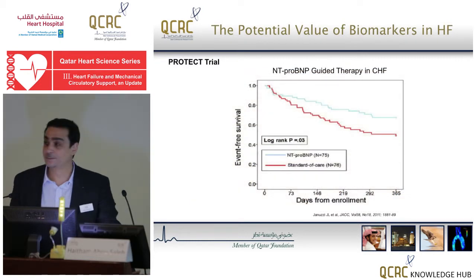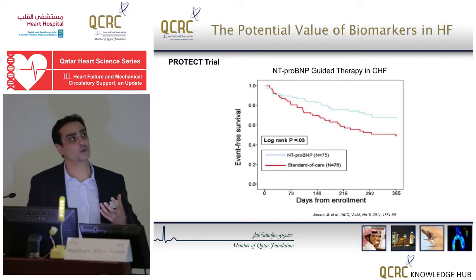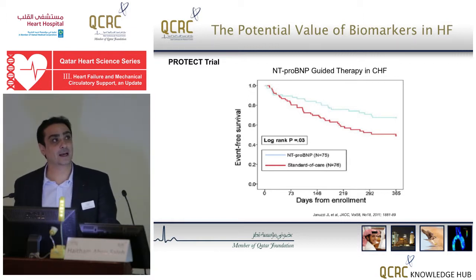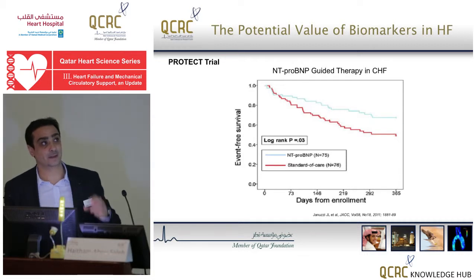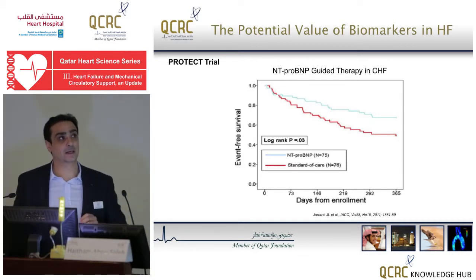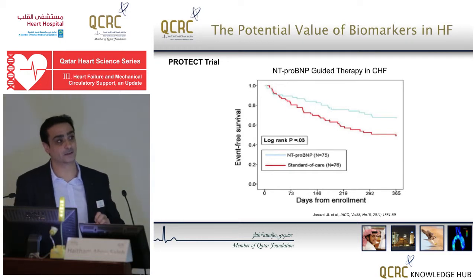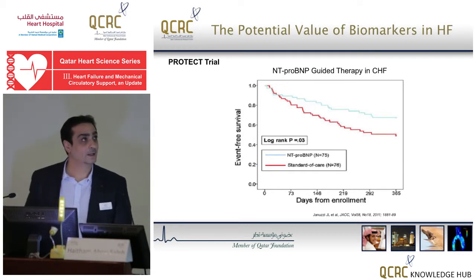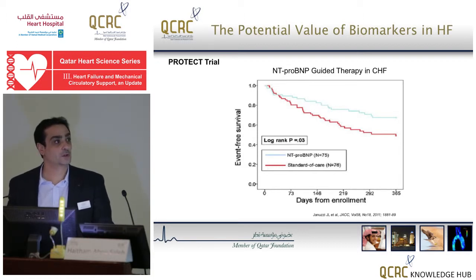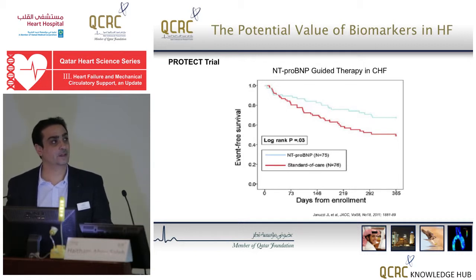This study shows the benefit of using NT-proBNP guided therapy in two different categories of patients. The first category was subjected to therapy guided by the NT-proBNP biomarker, whereas the second category was subjected to a standard of care strategy. The Kaplan-Meier curve shows clearly that patients enrolled in the NT-proBNP guided therapy have greater event-free survival over time than patients enrolled in standard of care therapy.